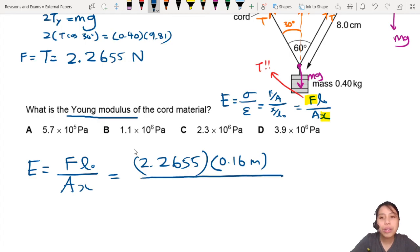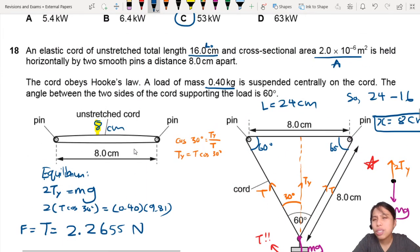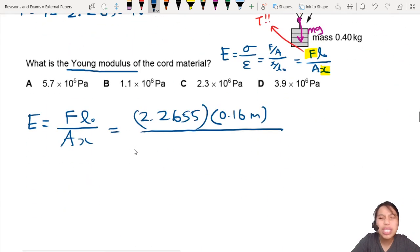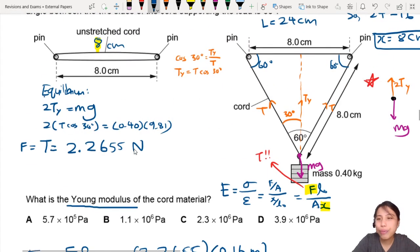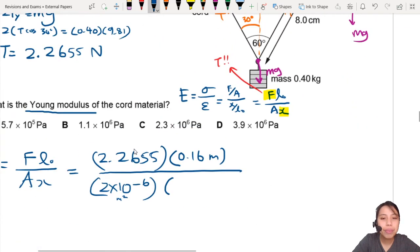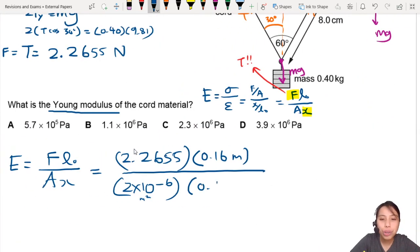Divided by cross-section area, which is 2 × 10⁻⁶ meter squared. All is good, no need to convert. Last one: extension, we found it just now, 8 cm, so we're going to do 0.08.